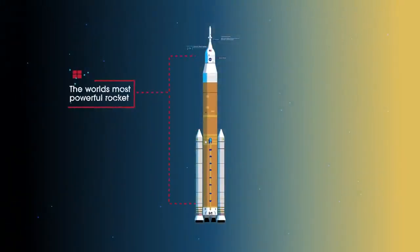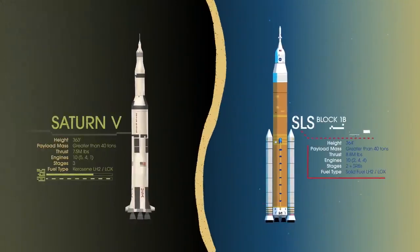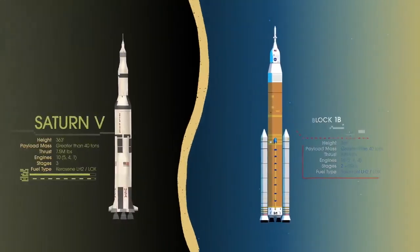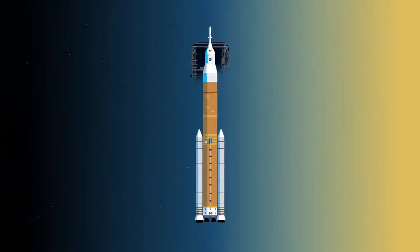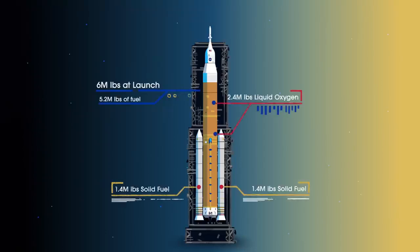Altogether, this is the world's most powerful rocket, and it exceeds the legendary Saturn V of the Apollo era in numerous ways. Sitting on the launch pad, the entire rocket, fully fueled, weighs just over 6 million pounds, 5.2 million of which is just the fuel.